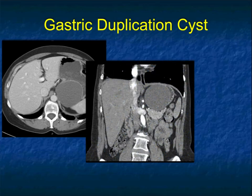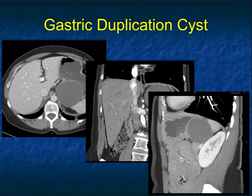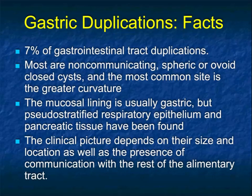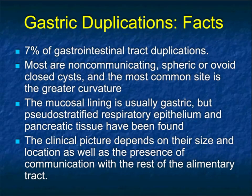Another example: a mass pushing on the stomach posteriorly — cystic. Is it in the gastric wall? Is it near the stomach? Is it a pseudocyst? When you look at all the images, it's very much in the region of the gastric wall. Water density — this was a gastric duplication cyst. Gastric duplication cysts represent 7% of GI tract duplications. Most are non-communicating, spheric or ovoid closed cysts, with the most common location being the greater curvature. Clinical picture depends on size and location — often incidental, but occasionally presenting with abdominal pain.